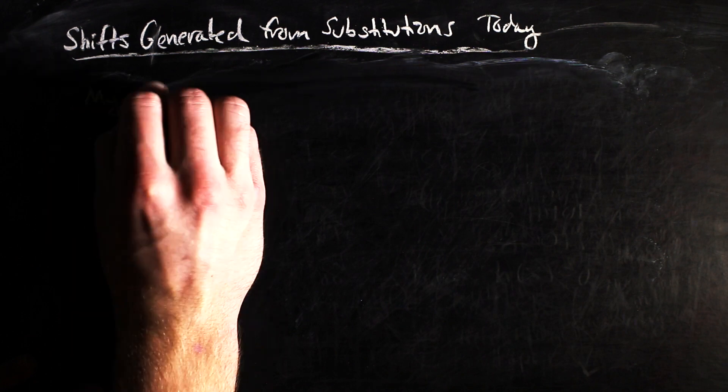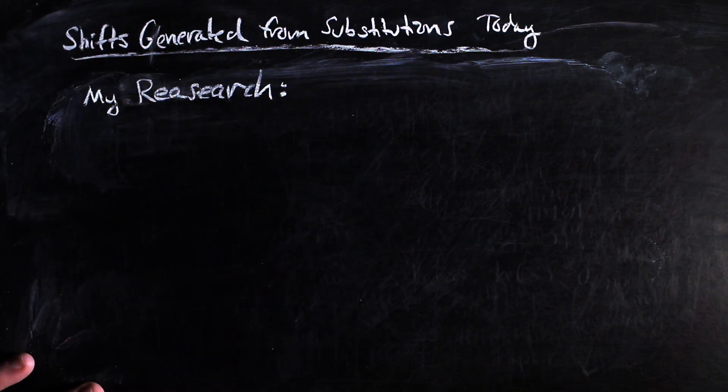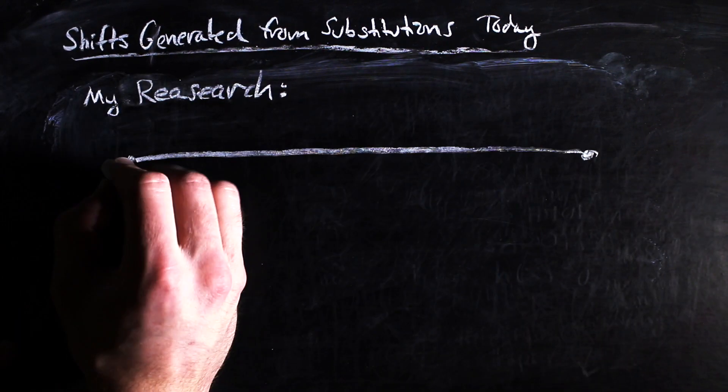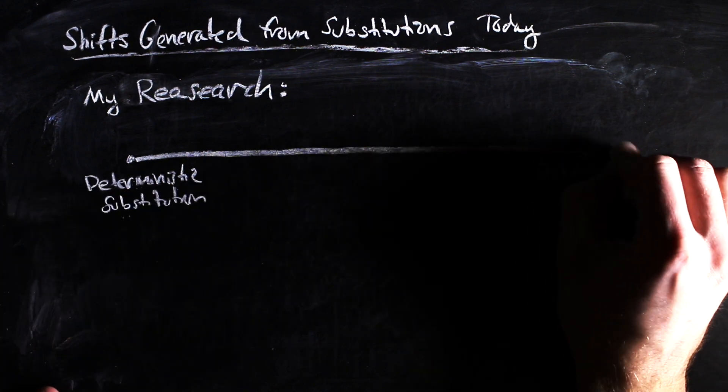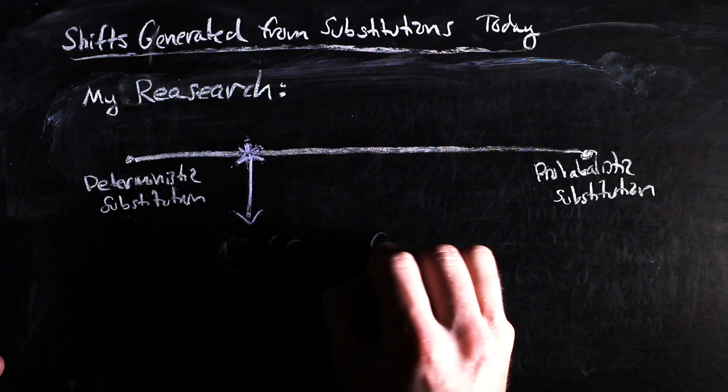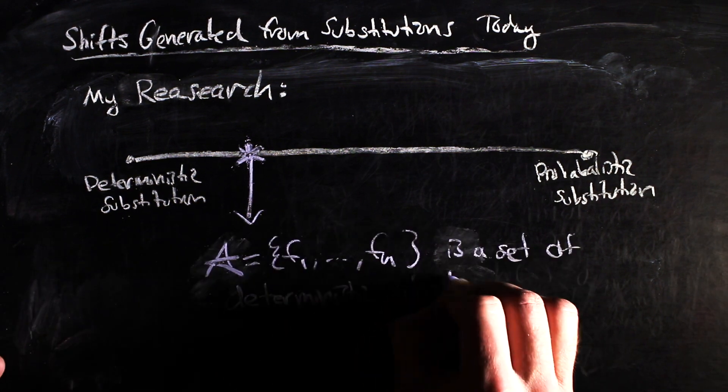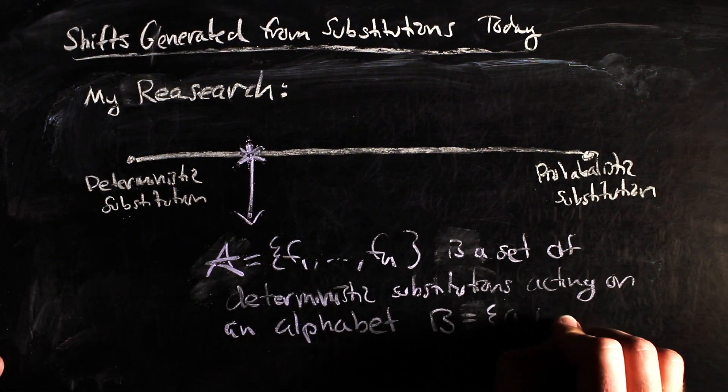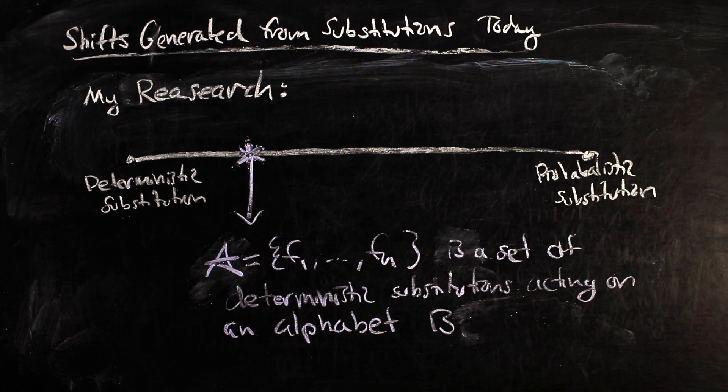I actually just presented a poster at the Joint Mathematics Meetings, one of the biggest mathematics conferences in the world, this weekend regarding something in between deterministic and probabilistic substitutions, where instead of one substitution, you have an alphabet of deterministic substitutions that act on a domain alphabet.